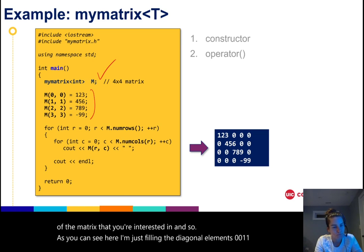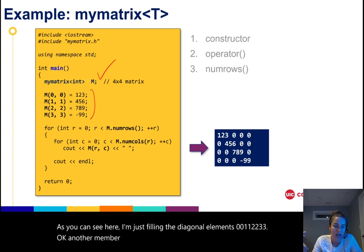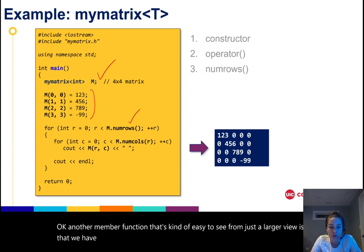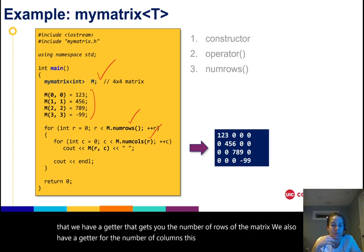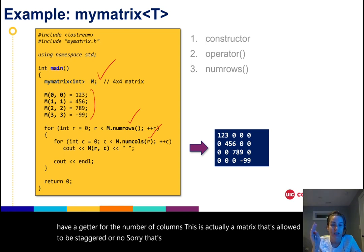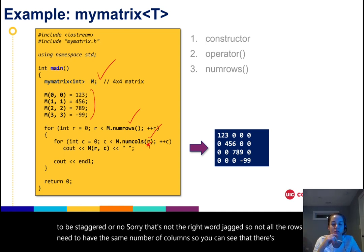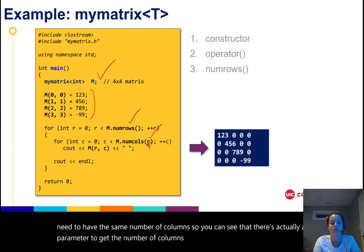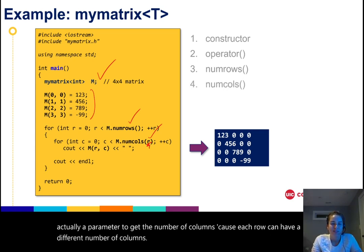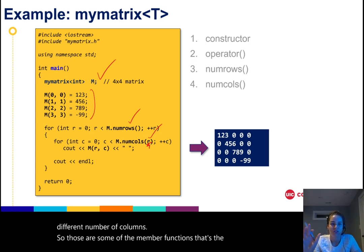Another member function that's kind of easy to see from just a larger view is that we have a getter that gets you the number of rows of the matrix. We also have a getter for the number of columns. This is actually a matrix that's allowed to be jagged, so not all the rows need to have the same number of columns. You can see there's actually a parameter to get the number of columns because each row can have a different number of columns.